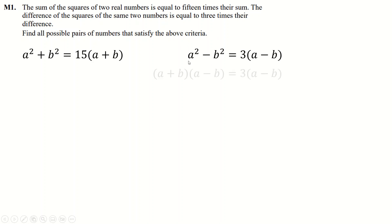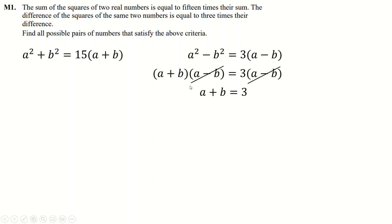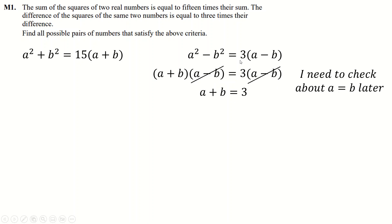As soon as you look at this you immediately need to factor. Now just be careful here — the objective is to cancel out these (a minus b)'s so we end up with three equals (a plus b). But you cannot cancel (a minus b) if (a minus b) is zero, because if it's zero then four times zero could equal seven times zero. So we need to check that case later.